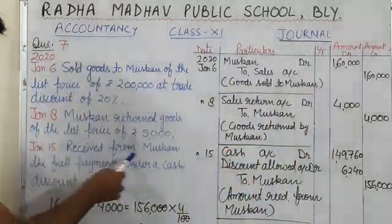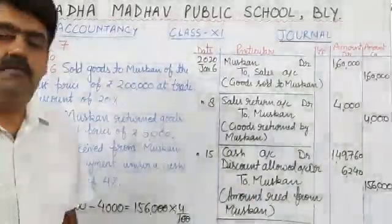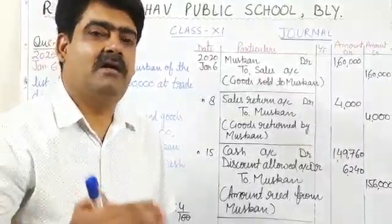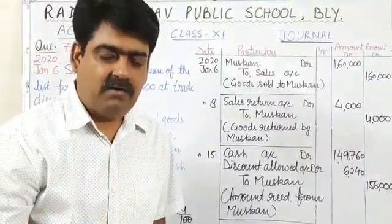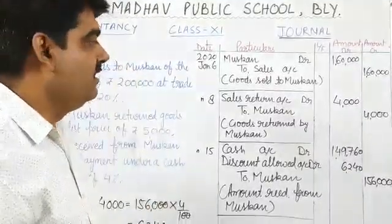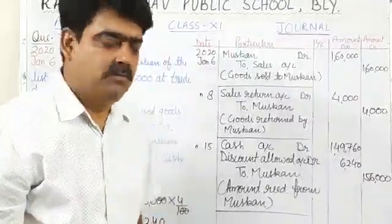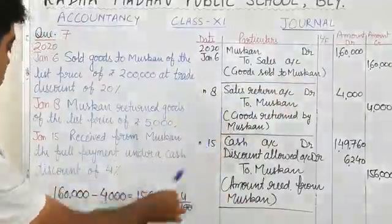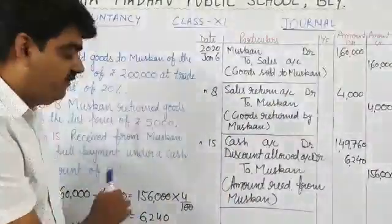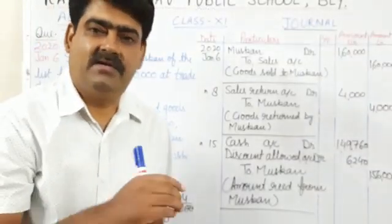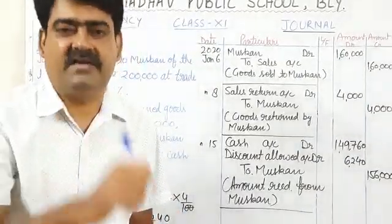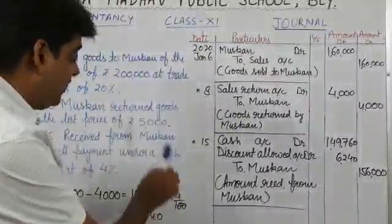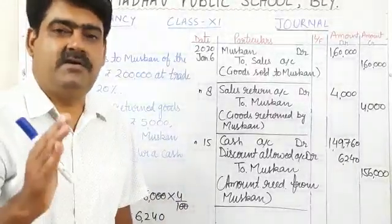Next: received from Muskan the full payment under a cash discount of 4%. At the time of receiving payment, we are allowing her 4% cash discount. Before calculating cash discount, we have to calculate how much amount is receivable from Muskan. 1,60,000 was the selling price and 4,000 is the amount of sales return, so 1,60,000 minus 4,000 gives 1,56,000 — the amount receivable from Muskan. On 1,56,000, we calculate 4% discount: 1,56,000 into 4% equals 6,240.